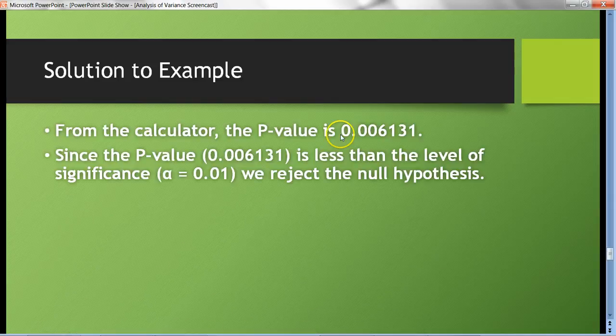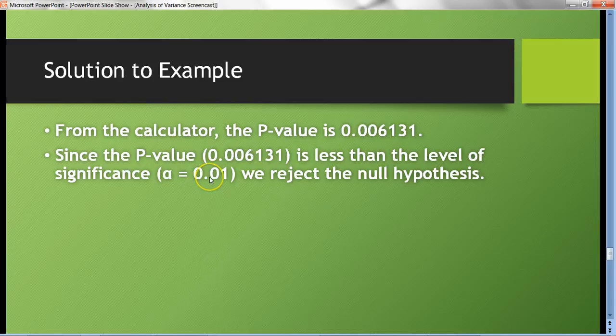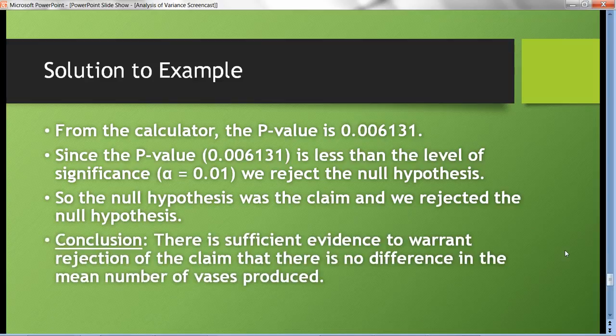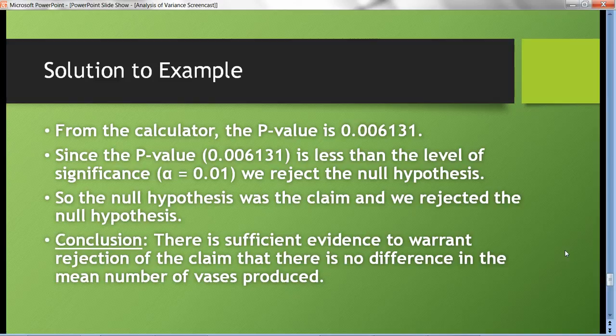There's our p-value we computed with our calculator, 0.006131. That value is less than the level of significance—that was 1%—so we reject the null hypothesis. The null hypothesis was the claim, and we rejected it. So our conclusion is: there's sufficient evidence to warrant rejection of the claim that there is no difference in the mean number of vases produced. That's how we can do analysis of variance on the TI graphing calculator.